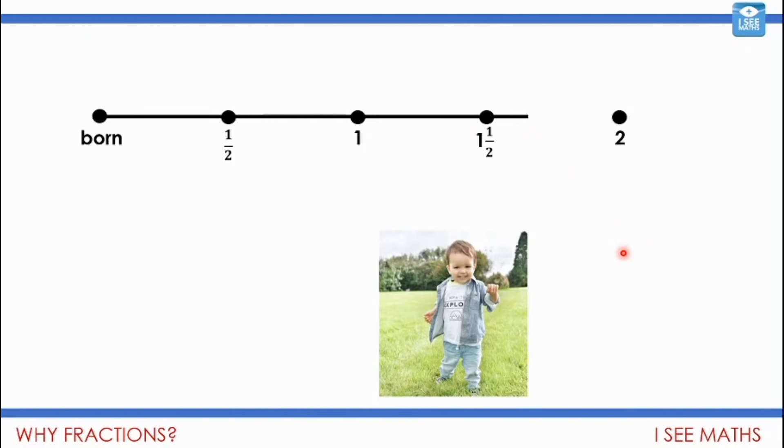So it might be that someone might say, oh, he's one and a half, or he's a bit more than one and a half. Now, we probably wouldn't give the exact fraction here for this exact place, but we often use fractions to describe our age as well. You might say, for example, that you are eight and a half.